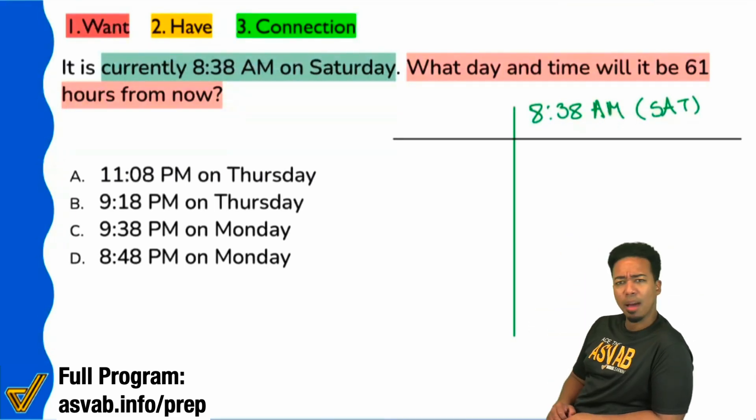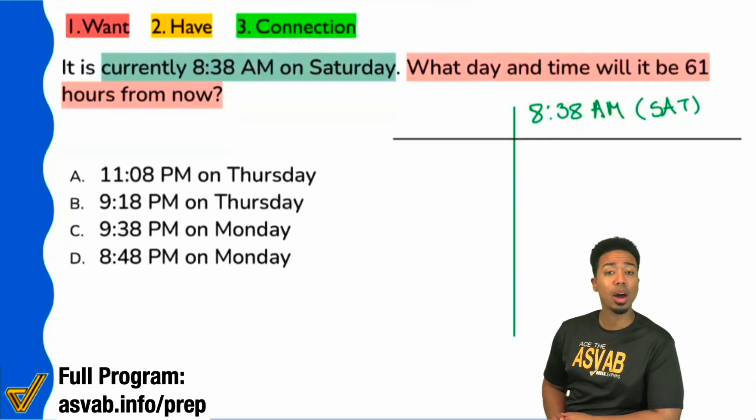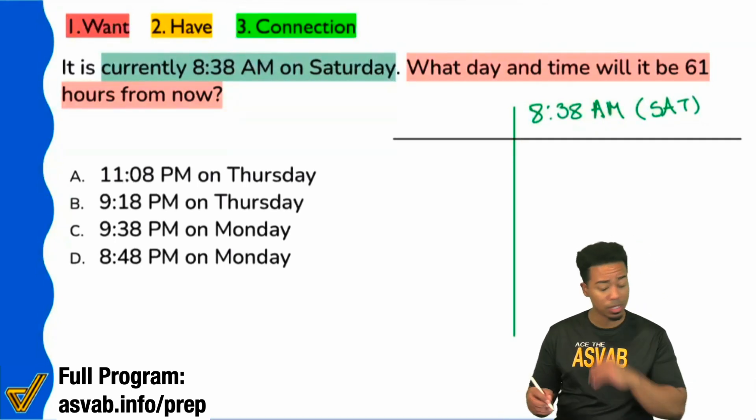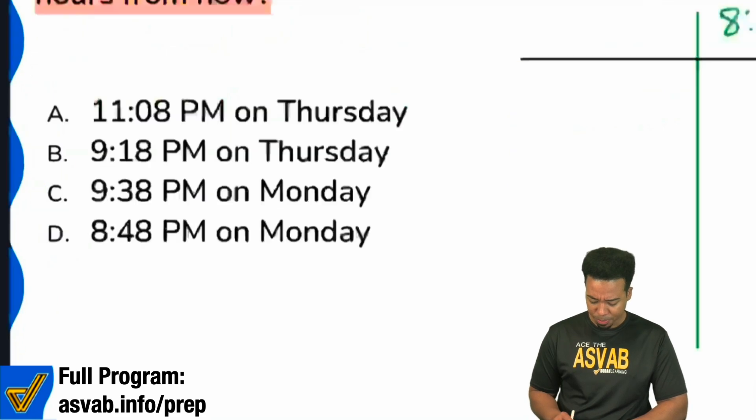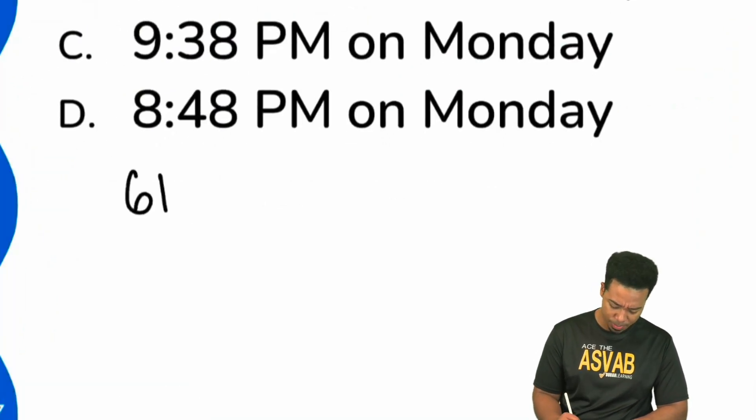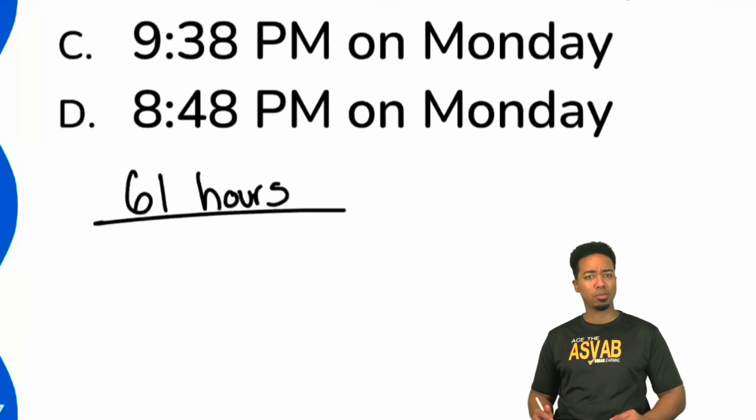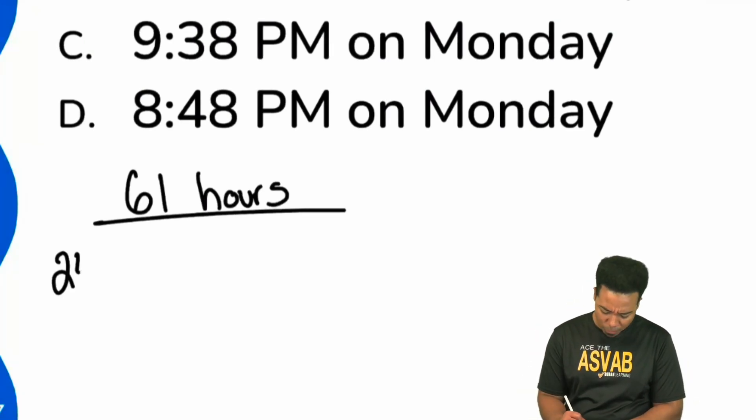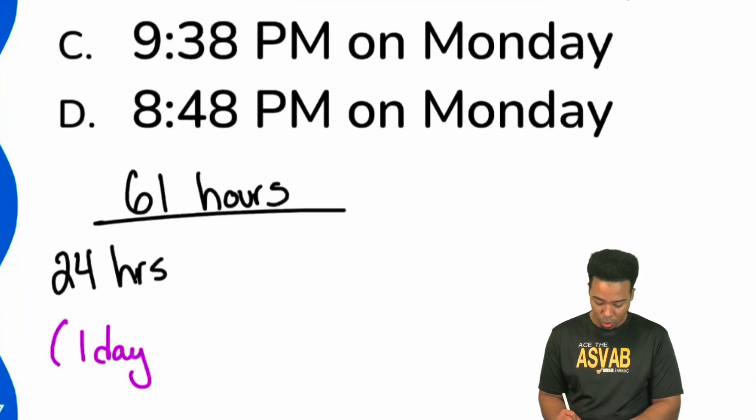The best way that we can handle this is understanding how time works. Notice that we have an hour and a day. How many hours until we repeat the same time? 24 hours, sounds good. So here's what I'm going to do: if I'm looking at 61 hours, let me ask myself how can I make this as easy as possible.